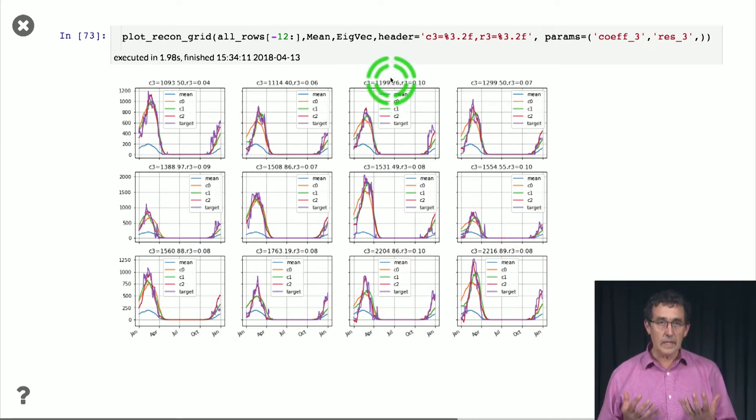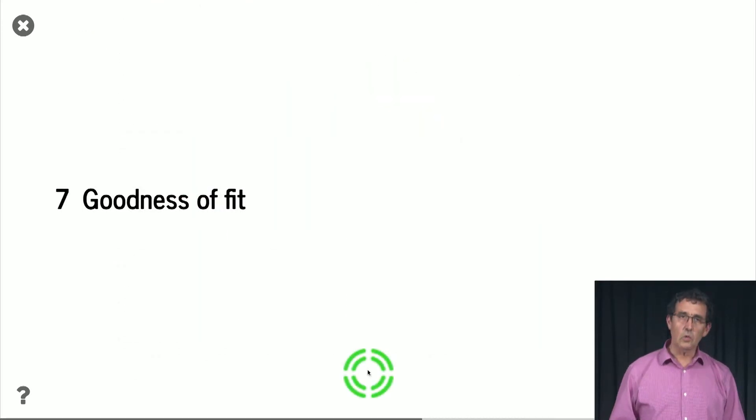Okay, so here we basically convince ourselves that there is really that information that is captured in the second and third eigenvectors. We could do the same thing for the first one, and I encourage you to do that, and then you'll see a very intuitive simple thing that if you have a large first coefficient, then you have more snow. And if you have a small negative coefficient, then you have less snow than the average. Okay, so we saw what coefficient 2 and coefficient 3 do. And you can check that also coefficient 1 behaves the way that we intuitively described.